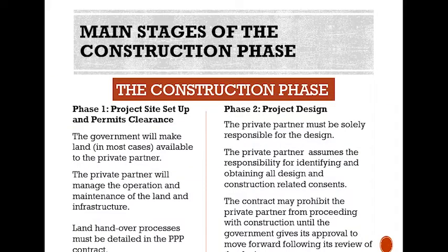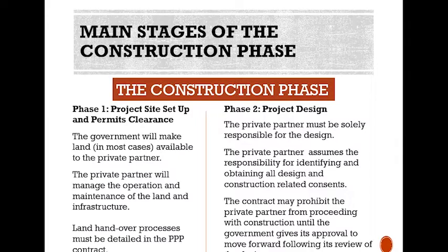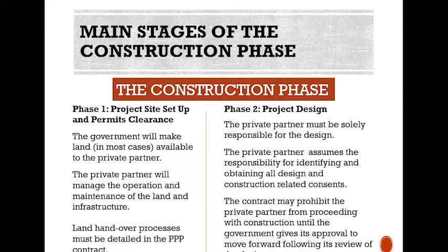Main stages of the construction phase. Phase one: project site setup and permits clearance. The government will make land available to the private partner, who will manage the operation and maintenance of the land and infrastructure. Land handover processes must be detailed in the PPP contract. Phase two: project design. The private partner must be solely responsible for the design and assumes the responsibility for identifying and obtaining all design and construction-related consents. The contract may prohibit the private partner from proceeding with construction until the government gives its approval following its review of the design.